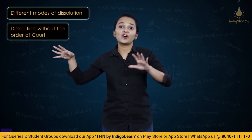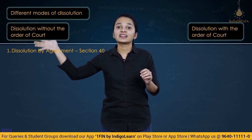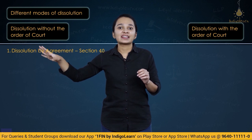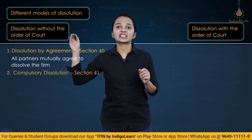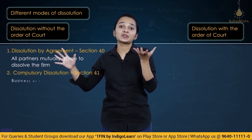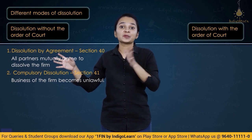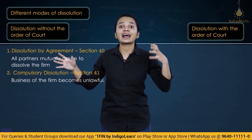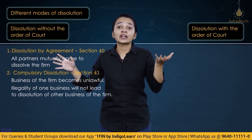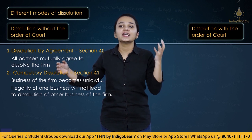The different modes of dissolution of firm: without the order of court, there are four situations. Section 40 — dissolution by agreement, where all partners mutually agree to dissolve the firm. Section 41 — compulsory dissolution, where an event makes the business unlawful, compelling dissolution. However, if a firm runs two different businesses and one becomes unlawful, it is not necessary to dissolve the firm with respect to the legal part — illegality of one business does not impact the other.